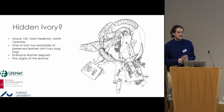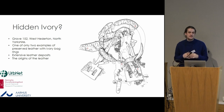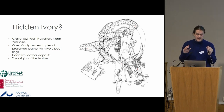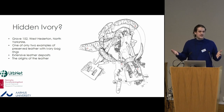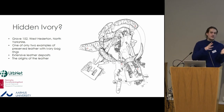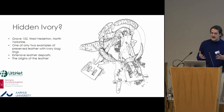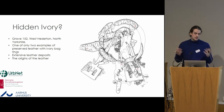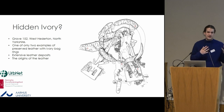This is an ivory ring bag assemblage from West Heslerton, North Yorkshire, grave 152 — one of only two examples where leather is still preserved on the ivory, which really confirms this is a waist bag. There are extensive leather deposits on this ring, and the origins of the leather is obviously a main question. These extensive deposits show that the ivory ring was completely covered.